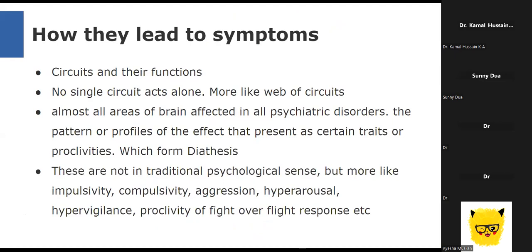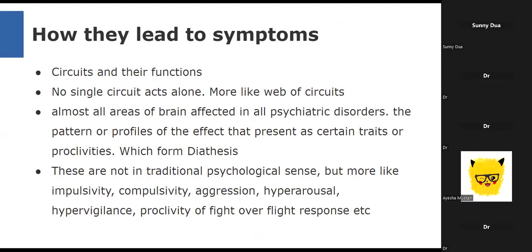These circuits, their function and dysfunction, lead to certain fixed, longitudinally stable characteristics we know as traits. These circuits also have feedback loops with each other and usually don't act alone. Dysfunction of one circuit can lead to compensatory changes in others, and ultimately all brain areas are affected in all psychiatric disorders. We can try to understand the profile of dysfunction of these circuits and the traits or longitudinally stable features we consider diathesis—not in terms of traditional psychological defense mechanisms, but more like impulsivity, compulsivity, working memory, processing speed, and aggression.